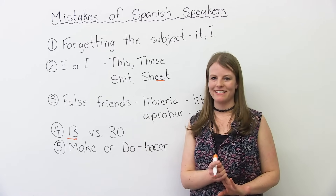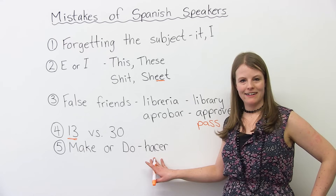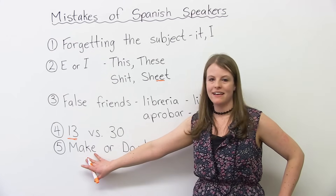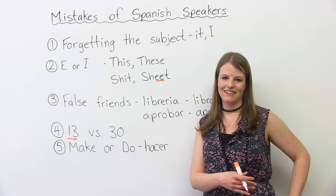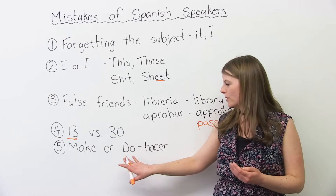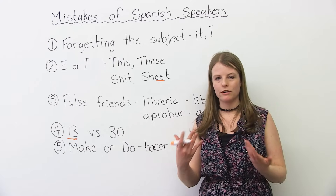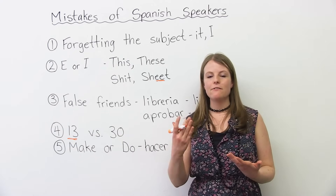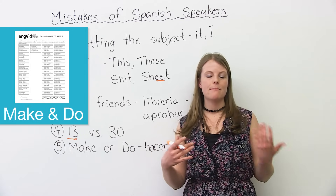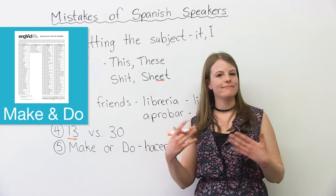Number five is one many students have trouble with. In Spanish you have the verb 'hacer', which in English has two meanings: to make something or to do something. Spanish students often use 'make' when they should use 'do', or 'do' when they should use 'make'. The best thing is to memorize which words go with make or do. If you visit our website at www.engvid.com, we have a great resource for looking at make and do — there's a really good list, so practice that.